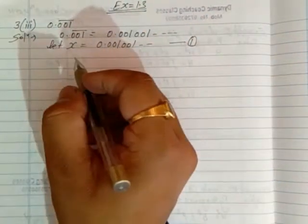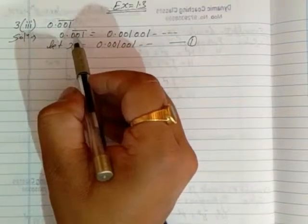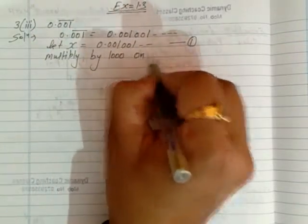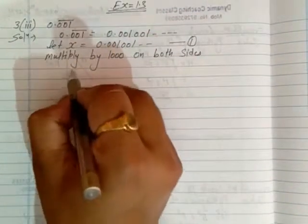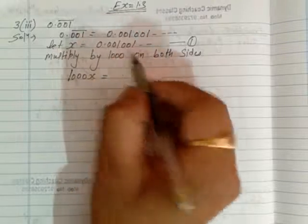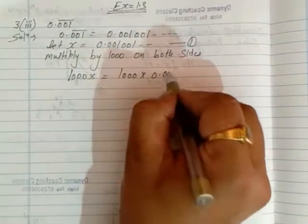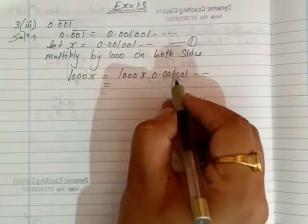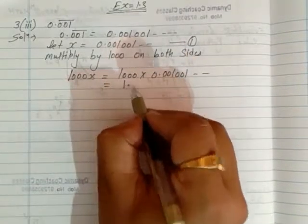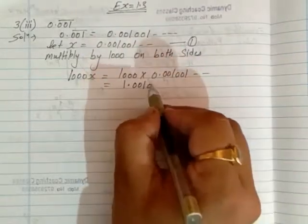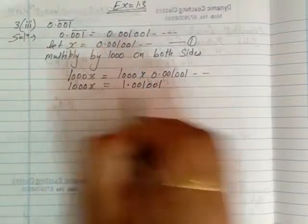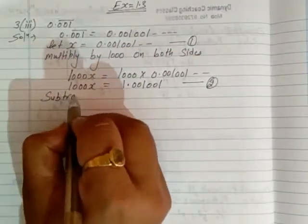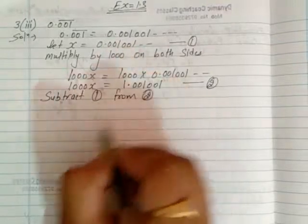Now, how many digits are under the bar? Three digits are under the bar, so we multiply by 1000 on both sides. So 1000x equals 1000 multiplied by 0.001001... The decimal point shifts 3 places, giving 1.001001... and so on. This becomes our second equation.